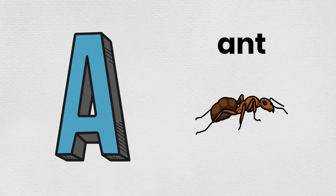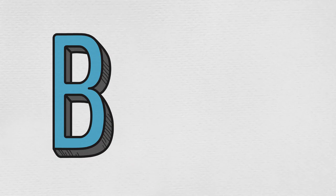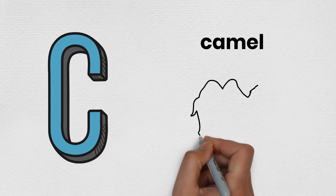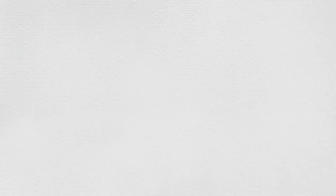A is for ant. B is for bat. C is for camel. D is for deer.